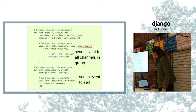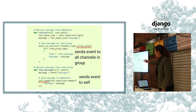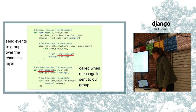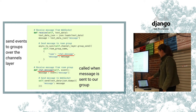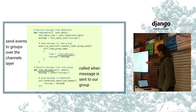Just to reiterate: the consumer is going to have a connect, a disconnect, a receive, and then sending a message to yourself. When receiving a message from a group, you need to have the names correspond to one another.